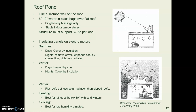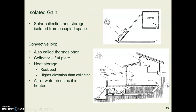Then there's this interesting thing: a roof pond. It's like a trombe wall but horizontal. The sun comes in, heats the water — there's a dark surface at the bottom of the water as your thermal mass — and then heat radiates down into your room. At night, heat accumulated in the room radiates up into that thermal mass and out into the night sky.